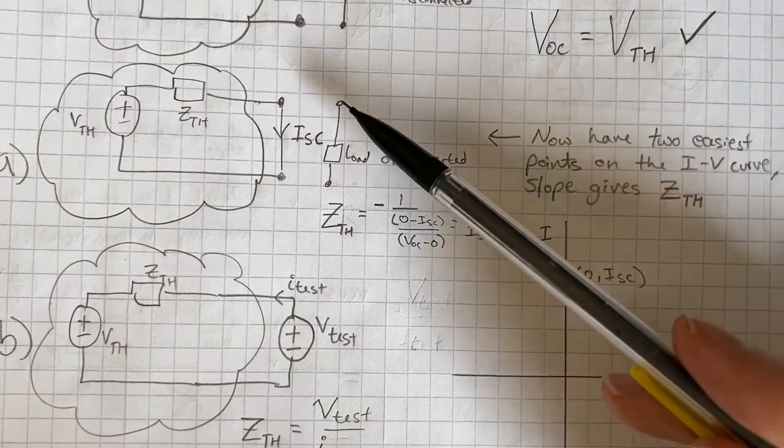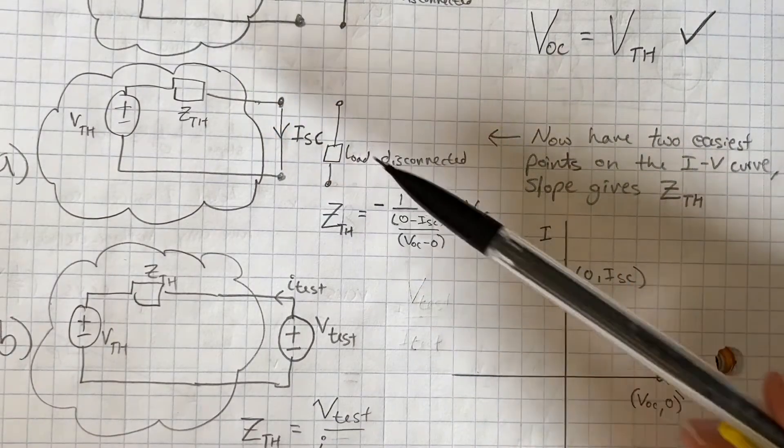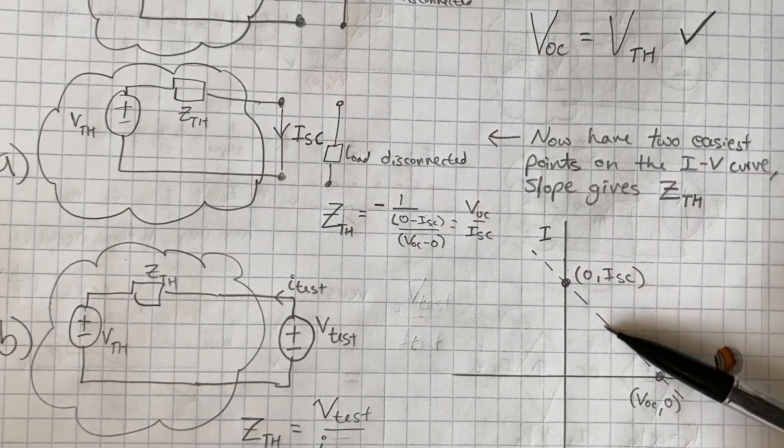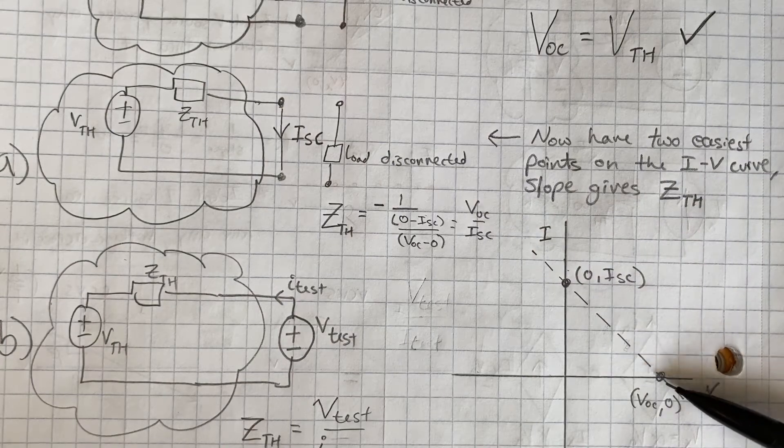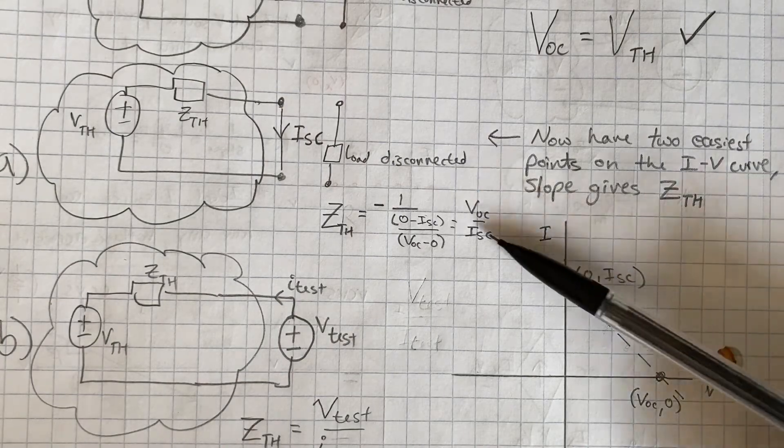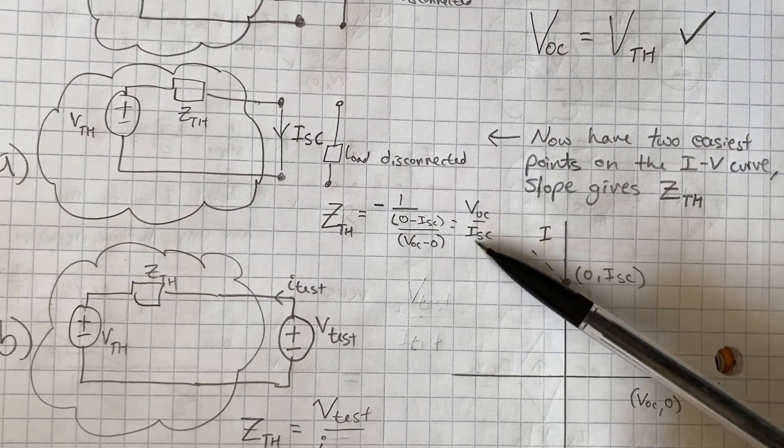Of course, we could also plug in different values for resistance and find different points on this line and find the slope from there. But the two easiest points are the intercepts because we can just divide the open circuit voltage by the short circuit current.